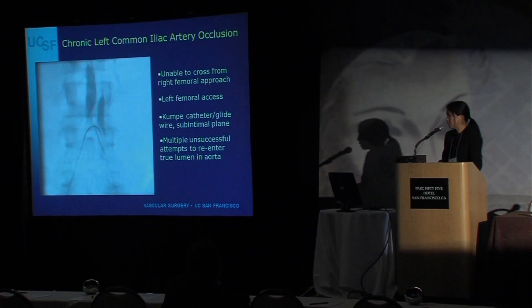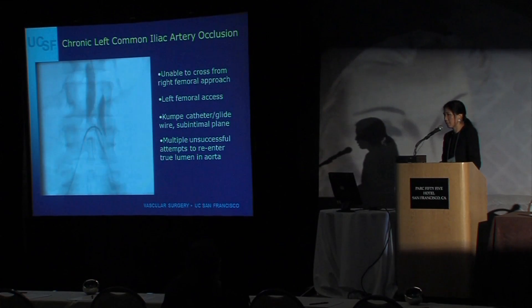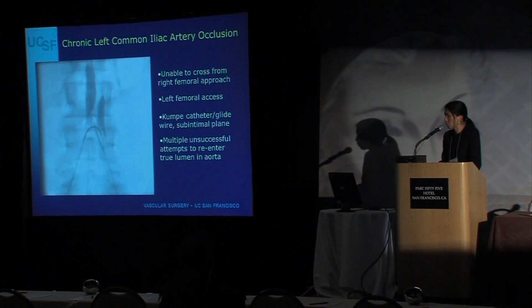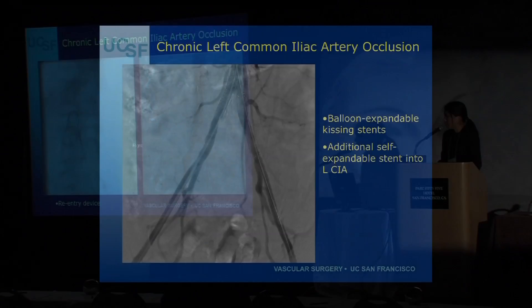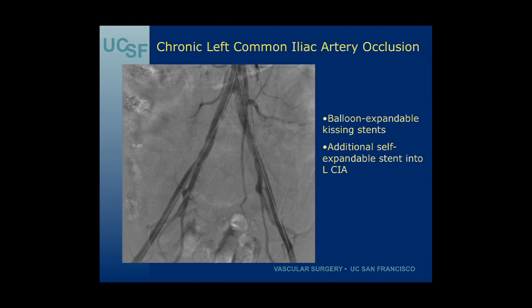With a comfy catheter and glide wire, we were in a subintimal plane and could not get back into the true lumen despite multiple attempts. When you see this, you get nervous — a big dissection plane in the aorta is concerning, and most people would quit at this point. But most of these lesions can be treated successfully. A re-entry device was used, allowing successful entry into the aortic true lumen. Balloon expandable kissing stents were then placed into the common iliac arteries and an additional self-expanding stent into the left common iliac artery with a pretty good result.